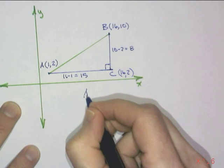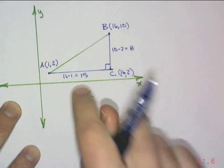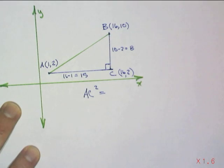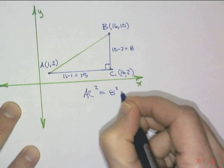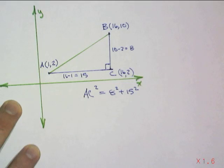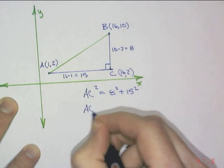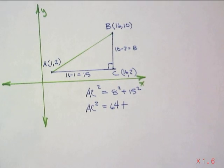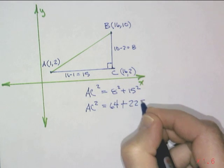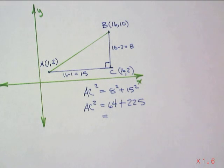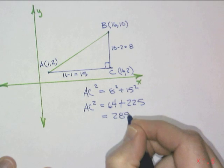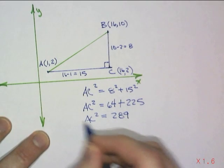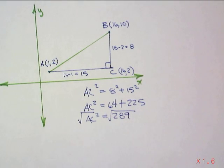So, AC is a hypotenuse. And in our Pythagorean theorem, it's a² + b² = c². There's the hypotenuse, which AC² is going to be equal to 8² + 15². All right. And then we just simply solve that AC² is going to be equal to 64 + 225. And that's going to give me 289.